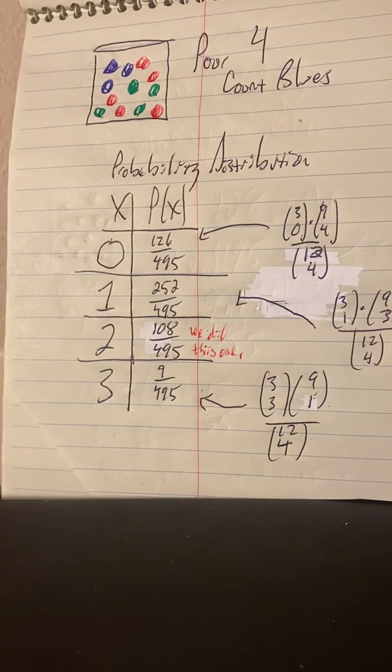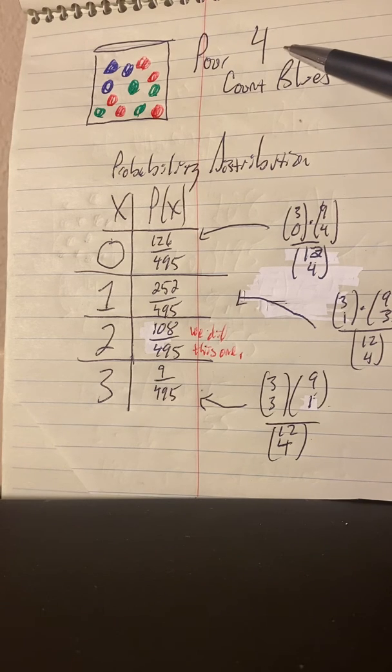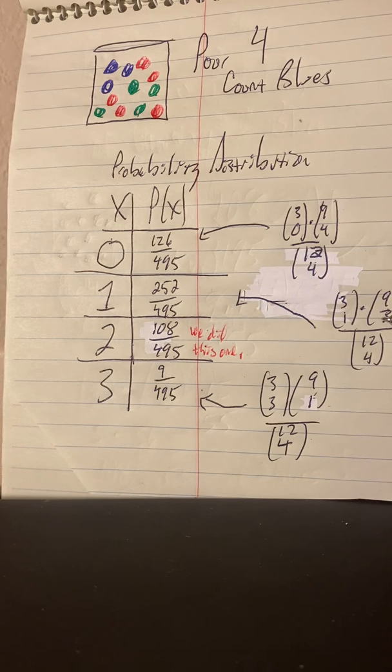How many ways are there to get one blue? Well, we'd have to get one of the three blues that are in there. But if we're getting one blue and we're choosing four, then that means we would need to get three other balls that were not blue. So from the nine, we're going to choose three. So we're going to multiply 3 choose 1 and 9 choose 3. Three choose one is three on Pascal's triangle, and nine choose three is 84. Three times 84 is 252. And the total number of outcomes is 495, 12 choose 4.